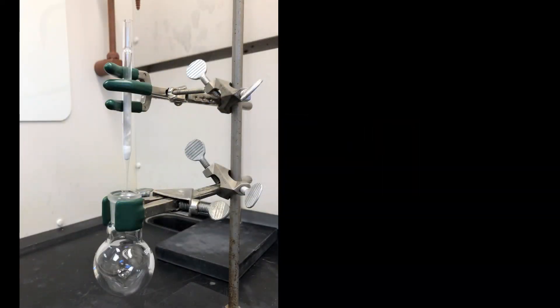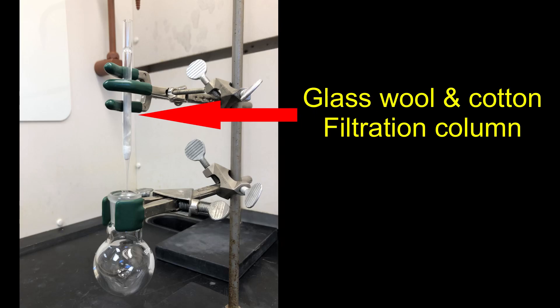After the reflux, cool the mixture in ice. The catalyst was removed by filtering the mixture through a pipette with glass wool and cotton inside.